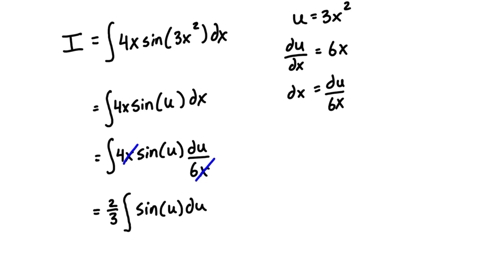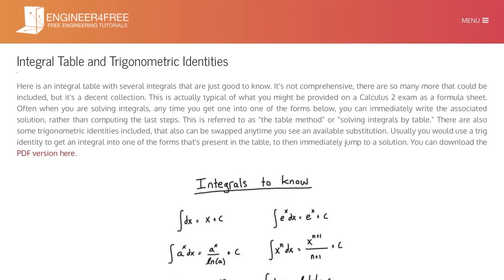Now this form is a really basic form of integral that you, if you know what it is already, you can substitute it in. The solution is negative cos of u. But if you're not sure what it is, we can look it up in our integral table, which is right here.